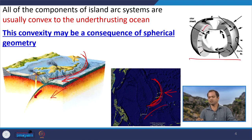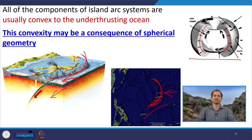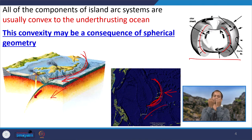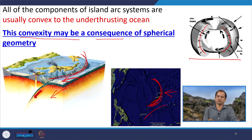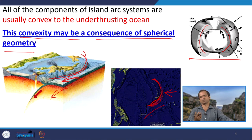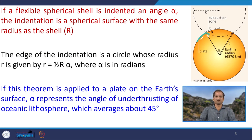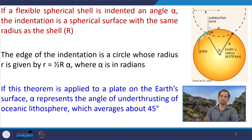Lithospheric plates are like curved caps on a sphere. If you imagine one curved cap underthrusting another curved cap and view it from the top, their intersection is curved and the convexity is toward the underthrusting plate. This is why the convexity may be a consequence of the spherical geometry of the plates. The variation in radius of curvature of different island arc systems can be explained by the ping-pong ball theory.